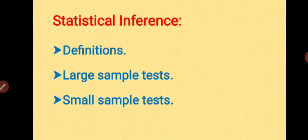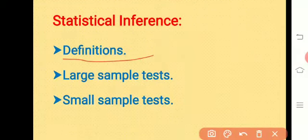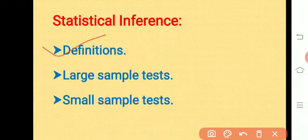In Statistical Inference, we are going to study some important definitions, then large sample test and small sample test. In definitions, we are going to study population, random sample, simple random sample, parameter, statistic, sample space, parameter space, sampling distribution of a statistic, then statistical inference — meaning and branches. We are also going to study estimation, including the definition of estimation, estimator, estimate, point estimation, interval estimation, confidence coefficient, confidence interval, and statistical hypothesis, including null hypothesis and alternative hypothesis.